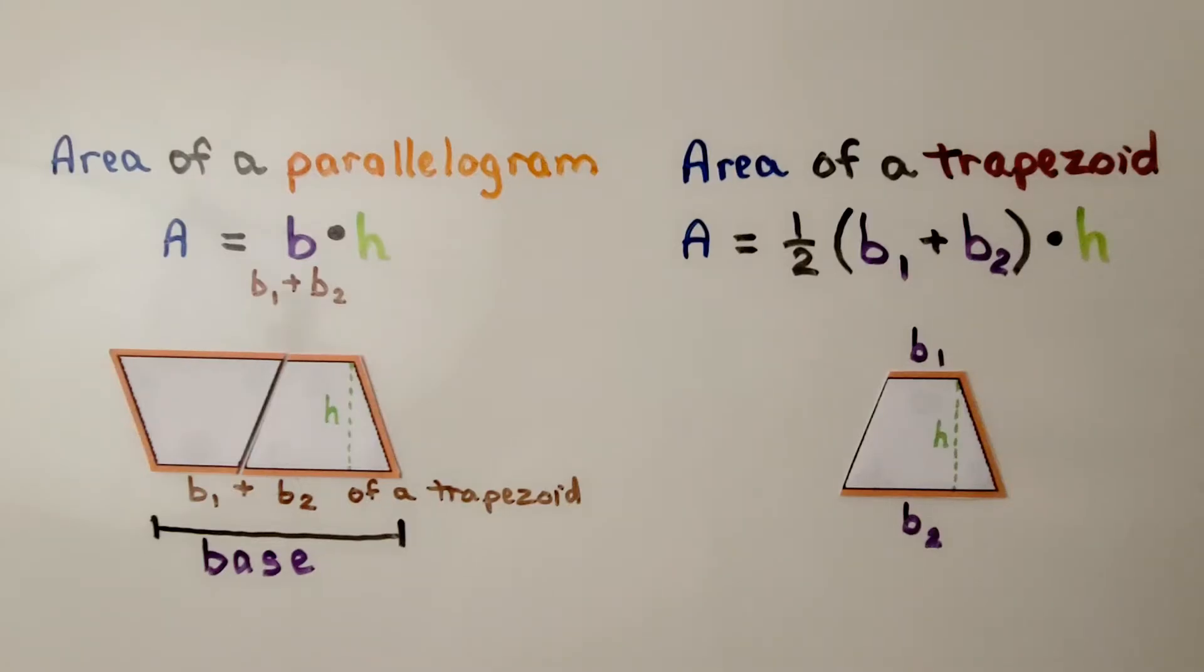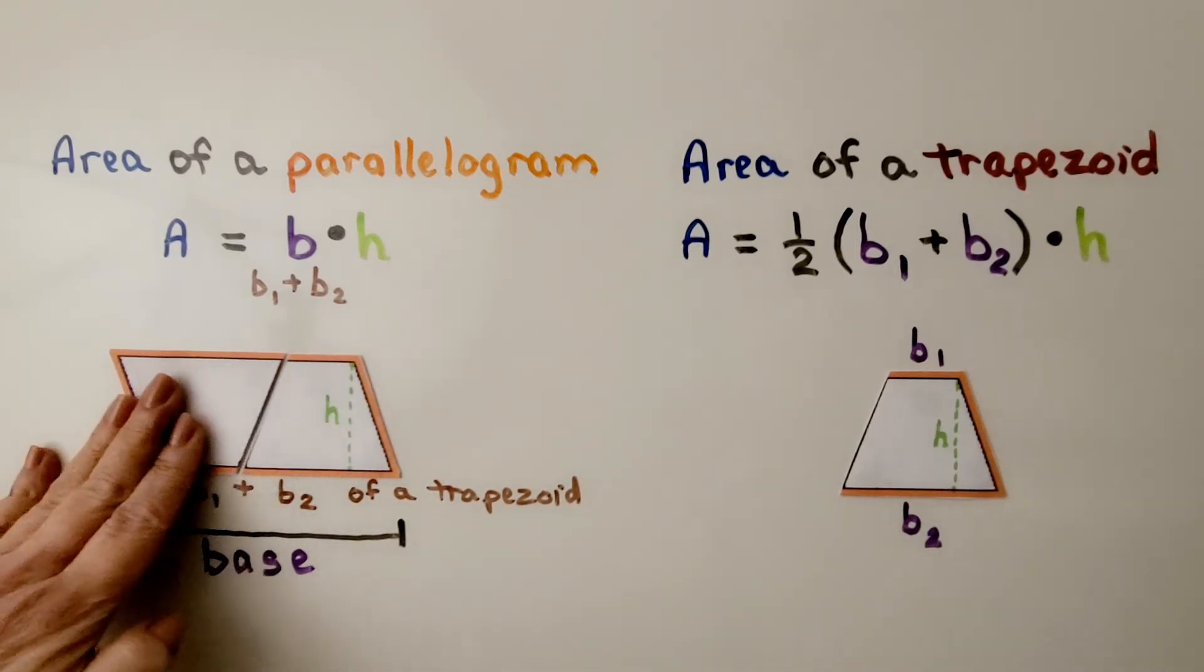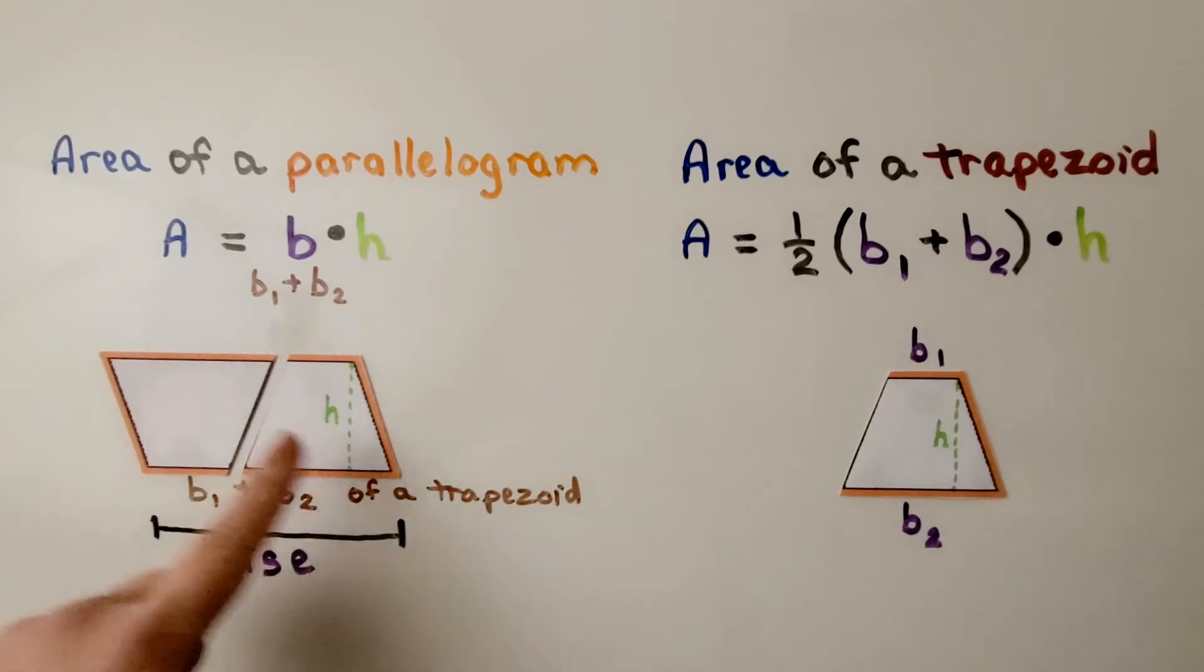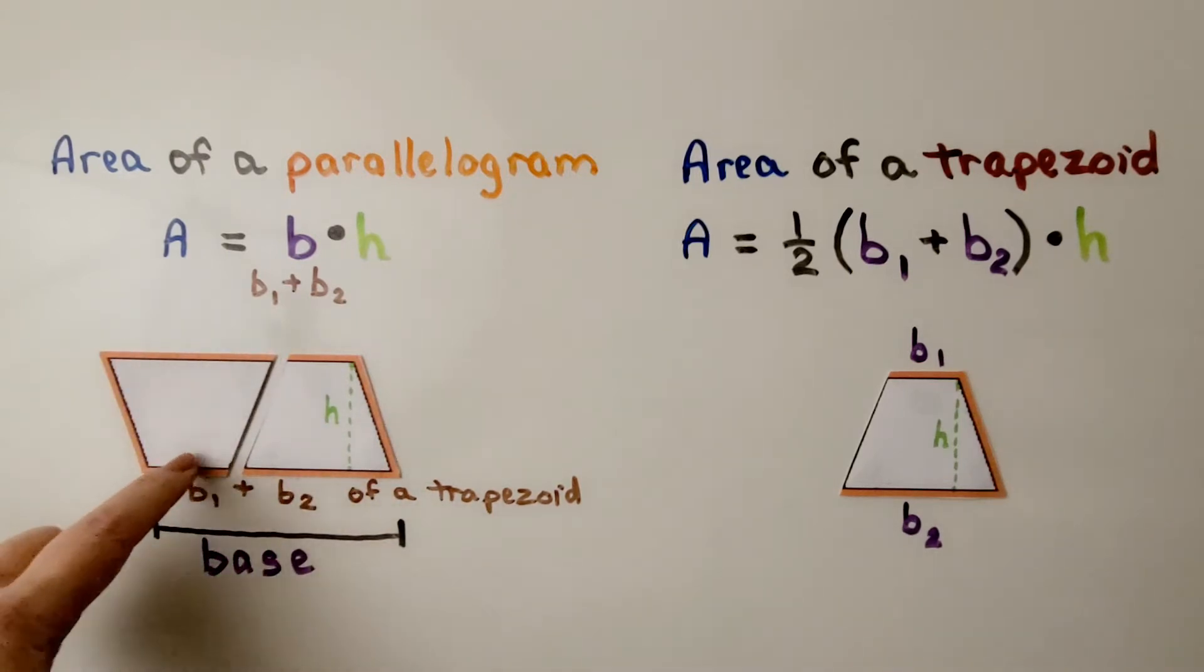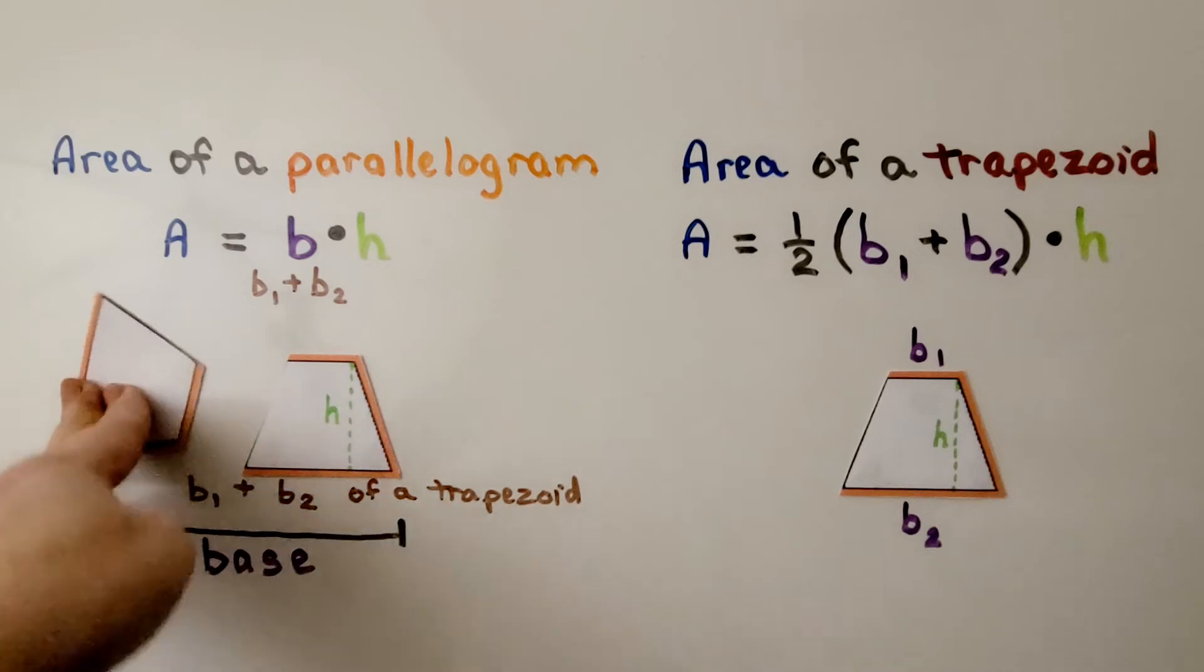We learned in the previous video how to find the area of a parallelogram. It was the base multiplied by the height. If we were to pull this apart, we would have our two trapezoids and here's the top. It's just flipped around.